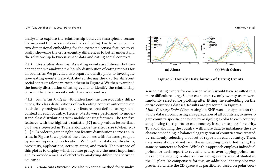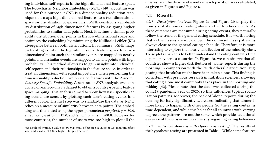The authors also conduct a statistical analysis with hypothesis testing to understand the cross-country differences. They perform t-tests to uncover features that define eating social context in each country and report the top five features with the highest t-statistic and p-values less than 0.05 in Table 2. They visualize individual self-reports in the high-dimensional feature space using stochastic neighbor embedding (TSNE) to investigate country-specific behaviors. A balanced aggregation of countries is created by randomly selecting a subset of reports in each country, and the data is standardized before fitting the embedding.